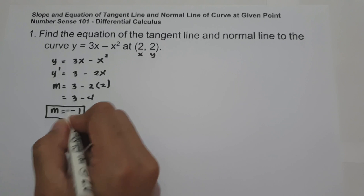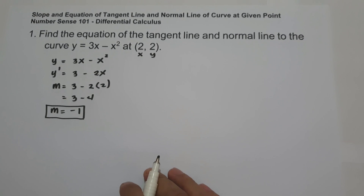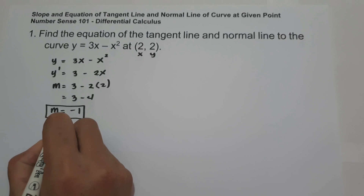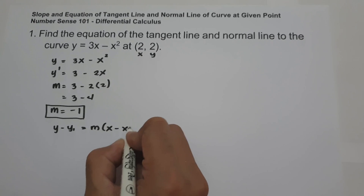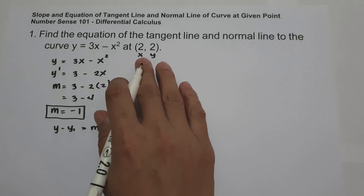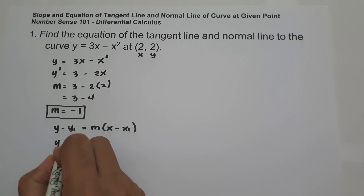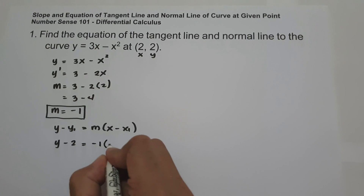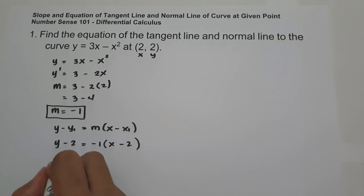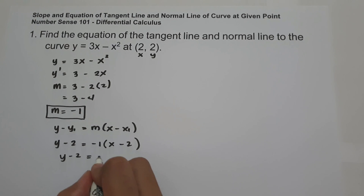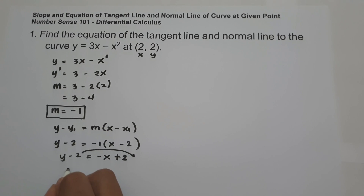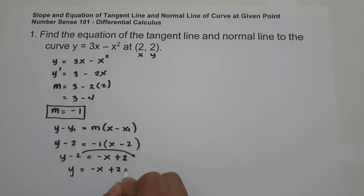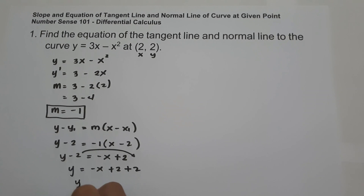To find the equation of the tangent line, we use point-slope form: y minus y₁ equals slope times x minus x₁. Substituting the slope and point (2, 2): y minus 2 equals negative 1 times x minus 2. Simplifying, y minus 2 equals negative x plus 2, so y equals negative x plus 4. That is the equation of the tangent line.